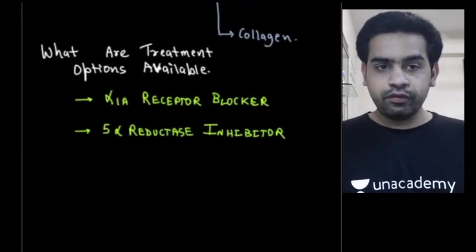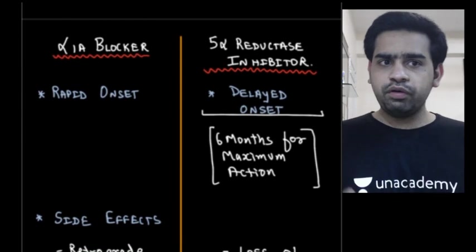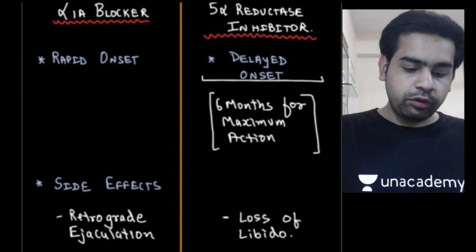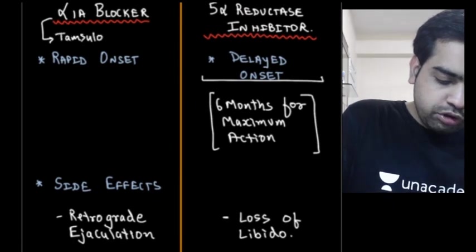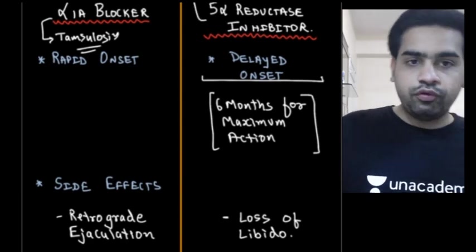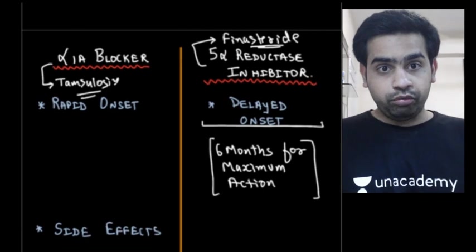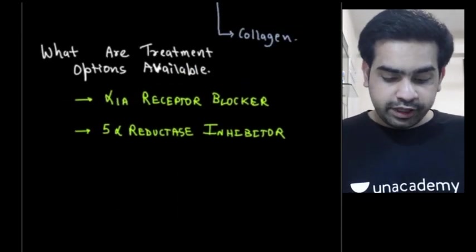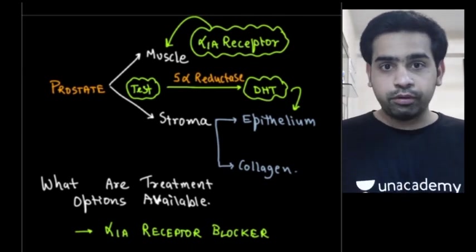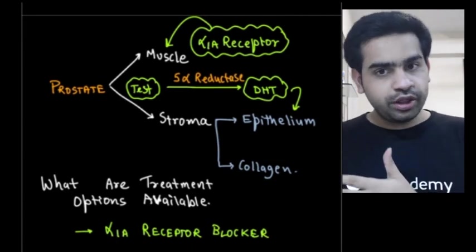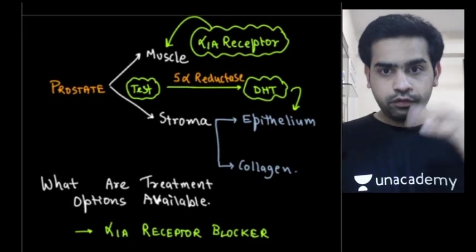Two medical options: an alpha-1a receptor blocker, or a 5-alpha reductase inhibitor. The most commonly used alpha-1a receptor blocker is tamsulosin. The most commonly used 5-alpha reductase inhibitor is finasteride. The alpha-1a receptor blocker works at the neuronal level, so it gives a rapid onset of action — the muscles relax and the outflow tract opens up quickly.